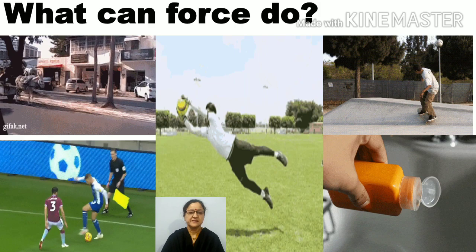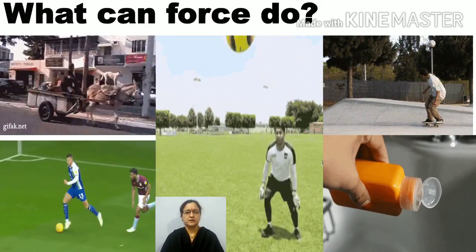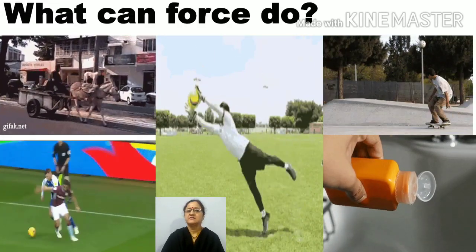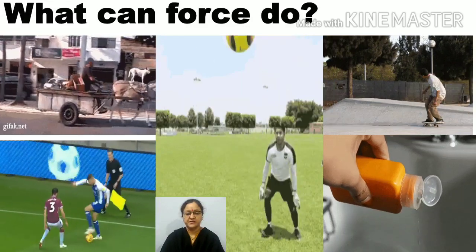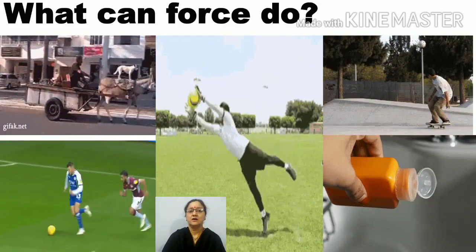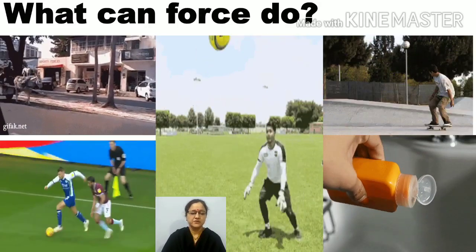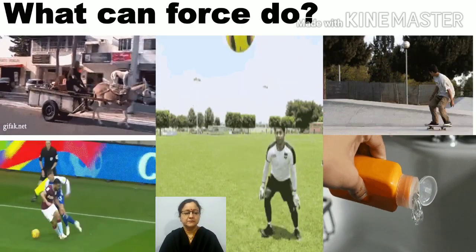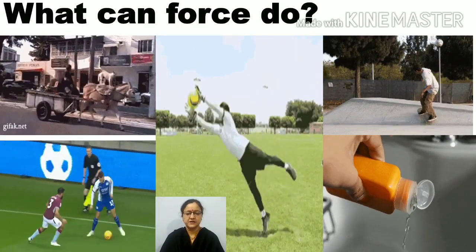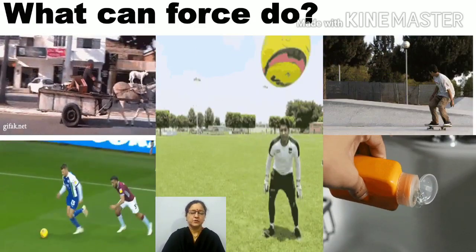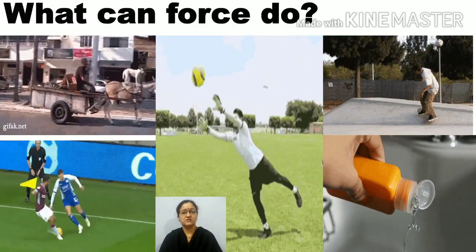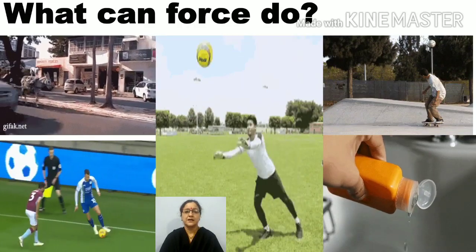In the previous slide, we understood that when we apply force — that is push or pull — many changes take place in an object. We will now see what force can do. The force can change the position of an object. Here, the boy is doing skating and you can see the skates are moving, the boy is changing his position by applying force.